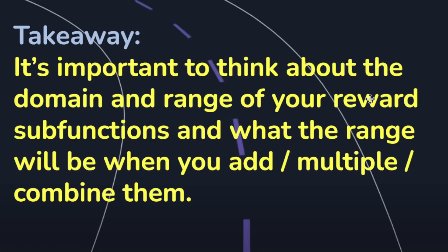So what's my main takeaway is it's important to think about the domain and range of your reward sub functions and what the range will be when you add or multiply or combine them in some way. So as you start creating these reward functions and taking ideas that you see from online or use ideas that you have on your own, and you start combining them, really think about what that output range will be. It might surprise you. You definitely look at the logs, look at the reward values for each step and an iteration or an episode. Again, the data may surprise you.